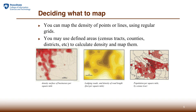Then we are ready to show them as either a dot-density map or color-graded density. Here we show three examples taken from the textbook ESRI Guide to Spatial Analysis.